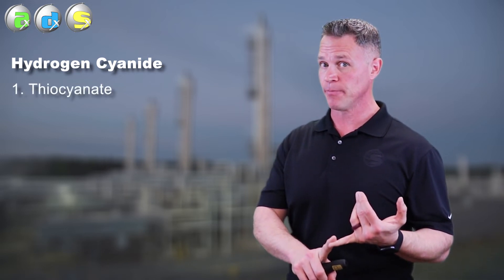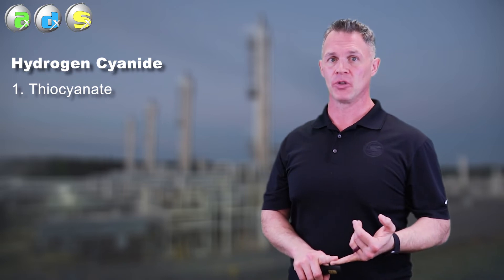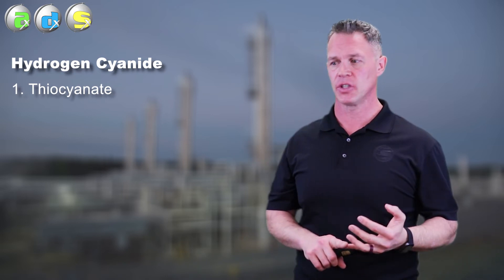Next, we have something that's pretty much associated only with refineries, hydrogen cyanide. Hydrogen cyanide is a nasty reactive acid that comes into the amine plant. We see it form thiocyanate. It's pretty much the only thing that forms thiocyanate, so look for that in your analysis.